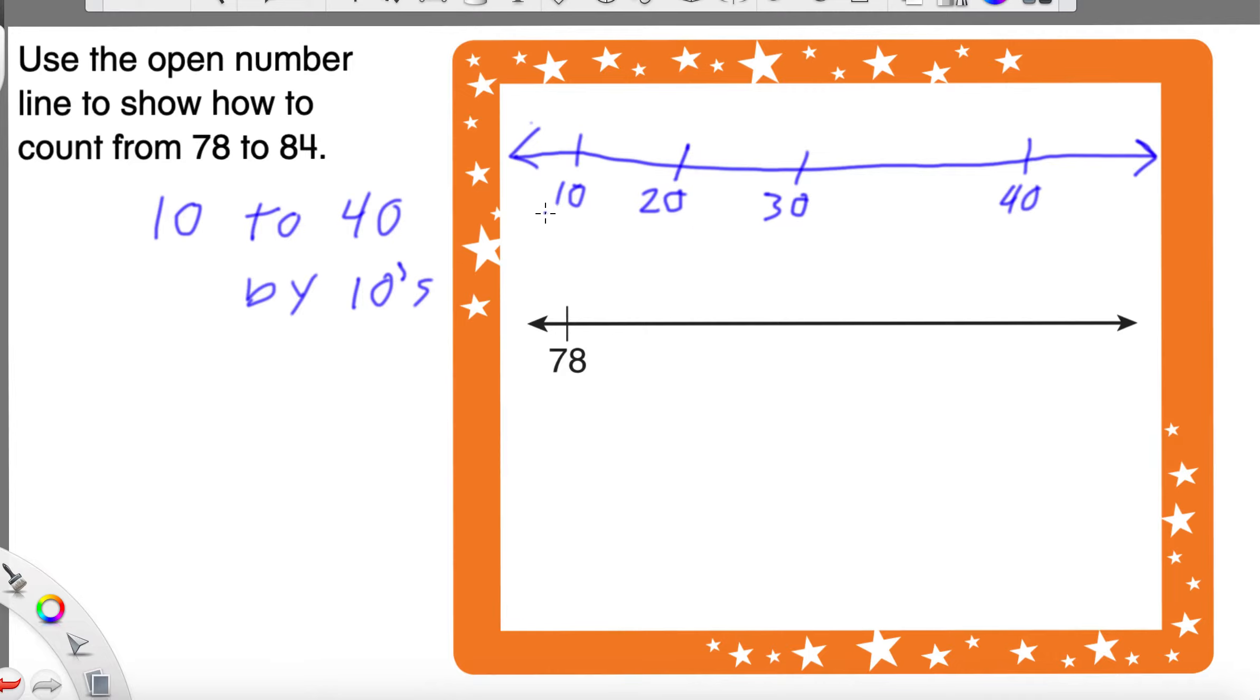And, don't forget, whenever we count by 10s, the number in the 10s house just goes up by 1. That's it. That's all that's really happening. So, now that we have figured out this number line, how many jumps will it take to go from 10 to 40?